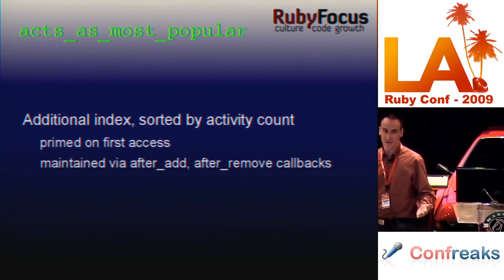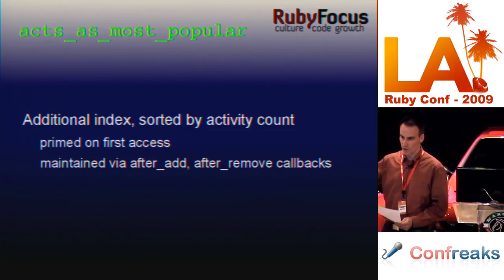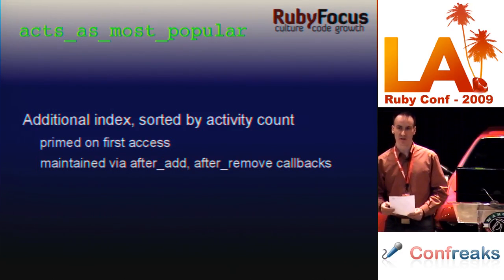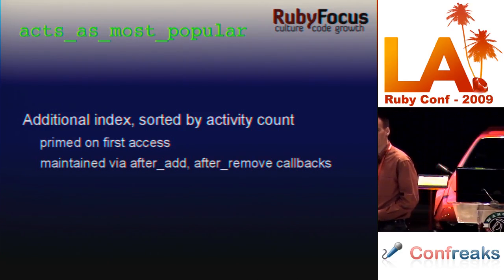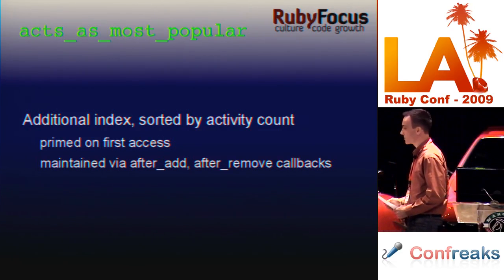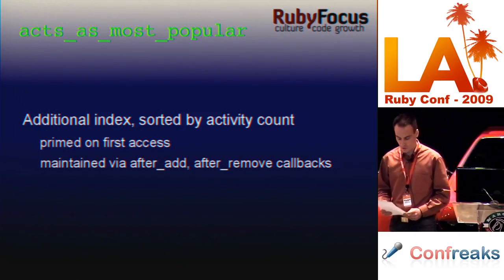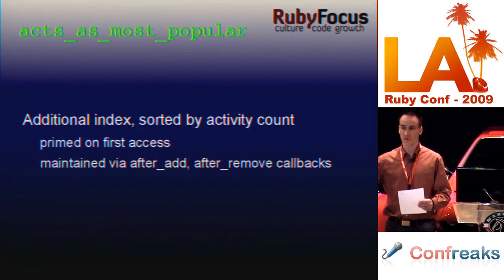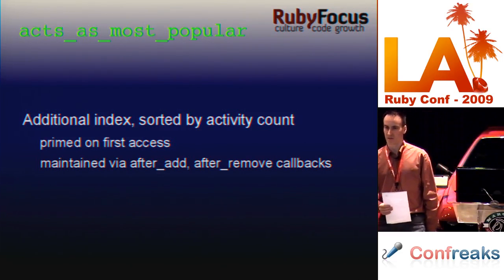What I did was take the cache_money framework and create an additional index. I want to keep my uploads sorted. Cache_money has the ability to order by primary key, but it cannot do any additional secondary key sorting. So I created an additional index which keeps the activity count in sorted order. It gets primed on the first access, and it is also maintained every time you add a viewing link to your image, video, or upload. That is tracked through the after_add and after_remove hooks on the Active Record association — the has_many association.